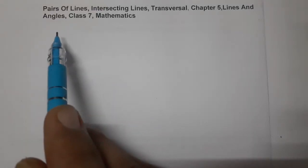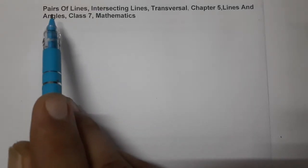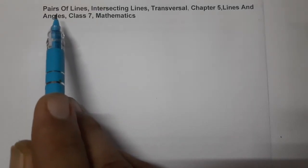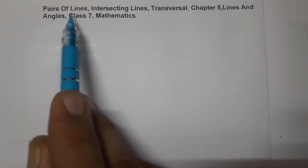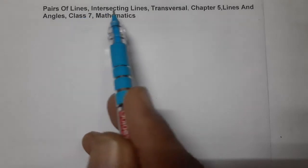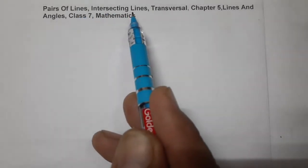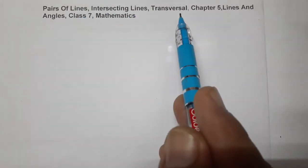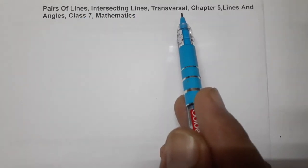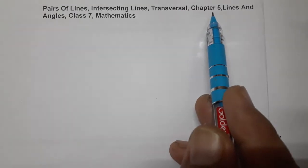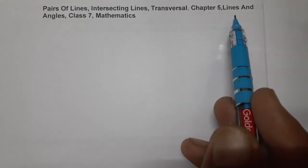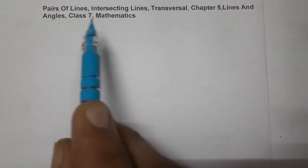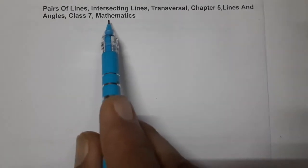Hello students, today we are going to learn about pairs of lines, intersecting lines, transversal. Chapter number 5, Lines and Angles, Class 7 Mathematics.